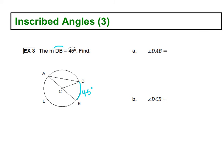Now if that's 45 degrees, can we find two angle measures? First, it says angle DAB. So if I go from D to A to B, we want to find that angle measure.